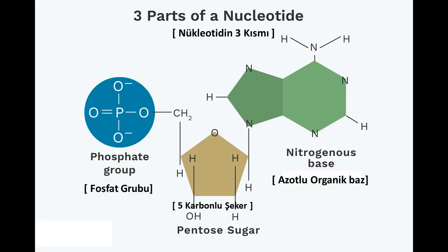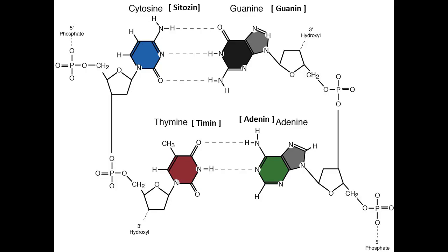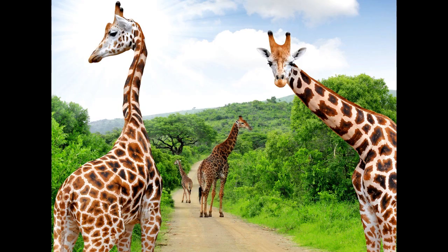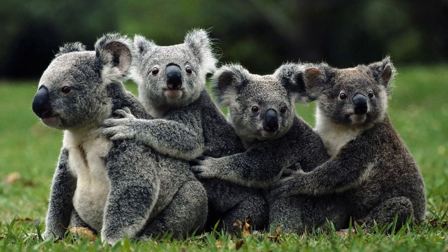A nucleotide — the structural unit of DNA — consists of a phosphate group, deoxyribose, and a nitrogenous organic base. The phosphate group is the same in all nucleotides. Deoxyribose is a 5-carbon sugar. The nitrogenous organic base determines the type of nucleotide. There are 4 types in DNA: adenine, thymine, guanine and cytosine. The phosphate group of one nucleotide and the deoxyribose of the other are linked by the phosphodiester bond, forming the backbone of DNA. Adenine and thymine, guanine and cytosine form hydrogen bonds with each other, connecting the two backbones. All living things in the world have different sequences of these 4 nucleotides.